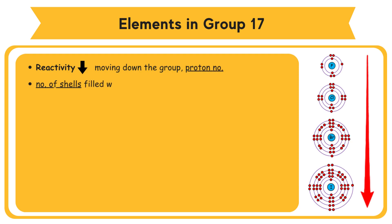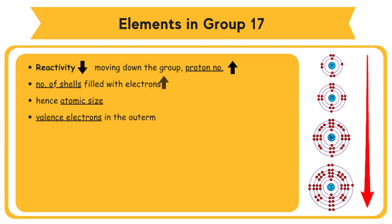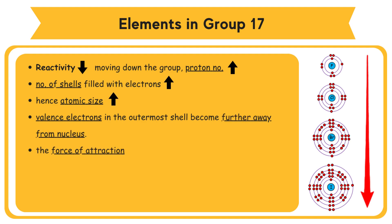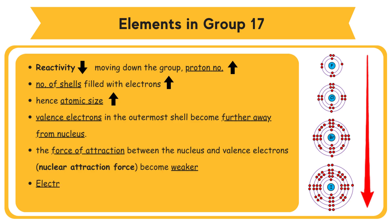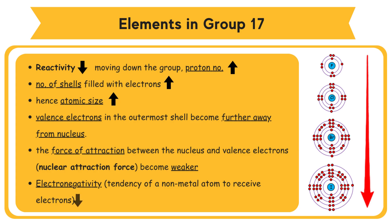When moving down the group, proton number increases. The number of shells filled with electrons increases, hence atomic size increases. The valence electrons in the outermost shell become further away from the nucleus. The force of attraction between the nucleus and valence electrons — nuclear attraction force — becomes weaker, hence the strength of the halogen atom to pull one electron into the outermost shell decreases. The electronegativity, which is the tendency of a non-metal atom to receive electrons into its outermost shell and to form an anion, decreases going down Group 17.